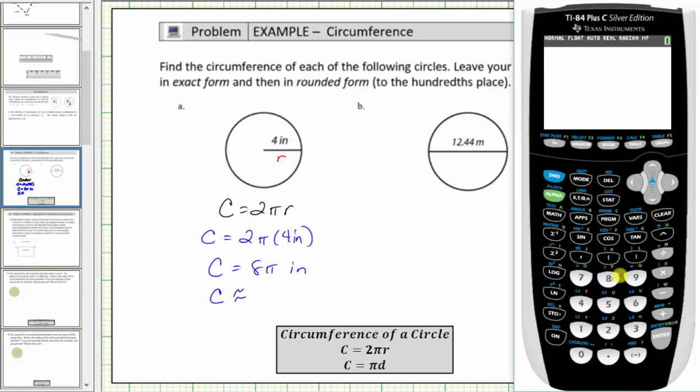Using the π button, we would have 8, then π is second in the exponent key, enter. To the hundredths place value, this is approximately 25.13 inches.